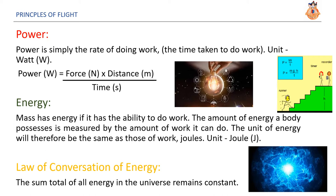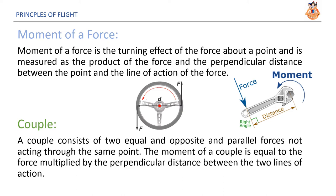Energy. Mass has energy if it has the ability to do work. The amount of energy a body possesses is measured by the amount of work it can do. The unit of energy will therefore be the same as those of work. The unit of energy is joule. The law of conservation of energy, the sum total of all energy in the universe remains constant. Moment of a force. Moment of a force is the turning effect of the force about a point and is measured as the product of the force and the perpendicular distance between the point and the line of action of the force. Couple. A couple consists of two equal and opposite and parallel forces not acting through the same point. The moment of a couple is equal to the force multiplied by the perpendicular distance between the two lines of action of the force.